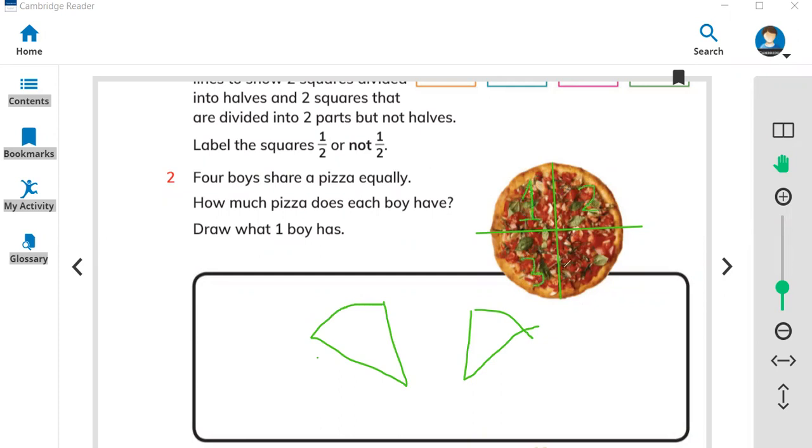So guys, today you learned how to share things equally by a fraction. Fraction means to cut shapes and make pieces. Fairly means all pieces should be same. That doesn't mean one boy is getting more and three boys getting less. So all pieces should be same. Thank you so much guys for watching, have a good day.